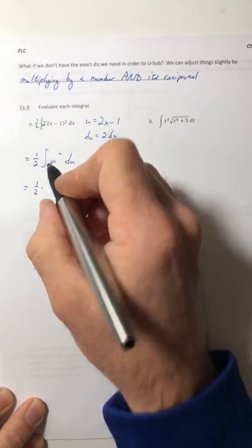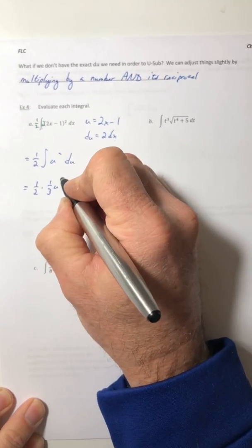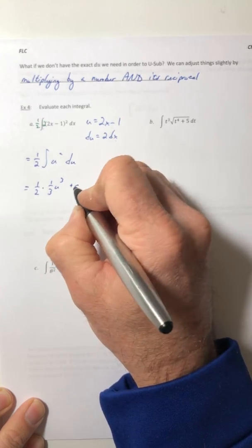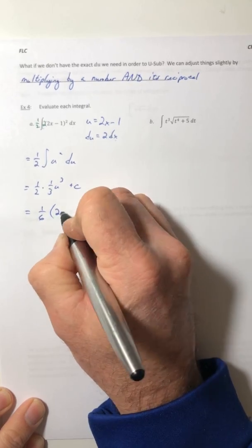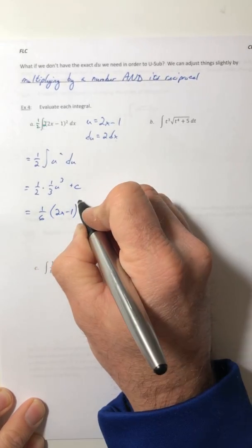u squared, so that is one-third u to the third plus c. So one-sixth times 2x minus 1 to the third plus c.